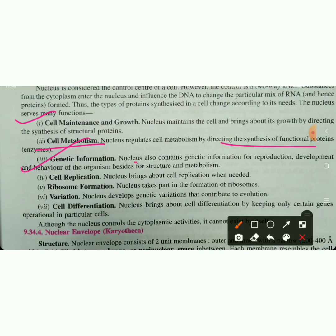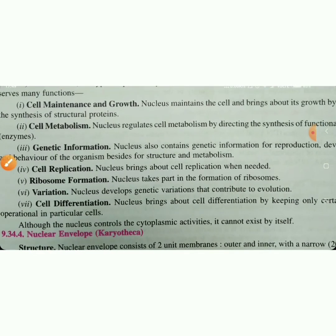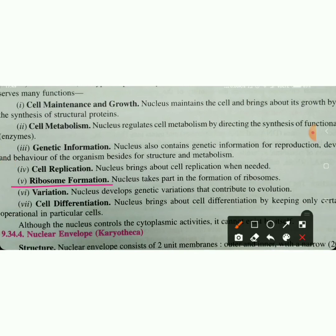Third, the nucleus stores genetic information needed for reproduction, development, and the behavior of an organism. Fourth is self-replication — replication means making the same copy, and the nucleus brings about cell replication when needed. The nucleus also helps ribosomes with variations and evolution, and assists in cell differentiation.